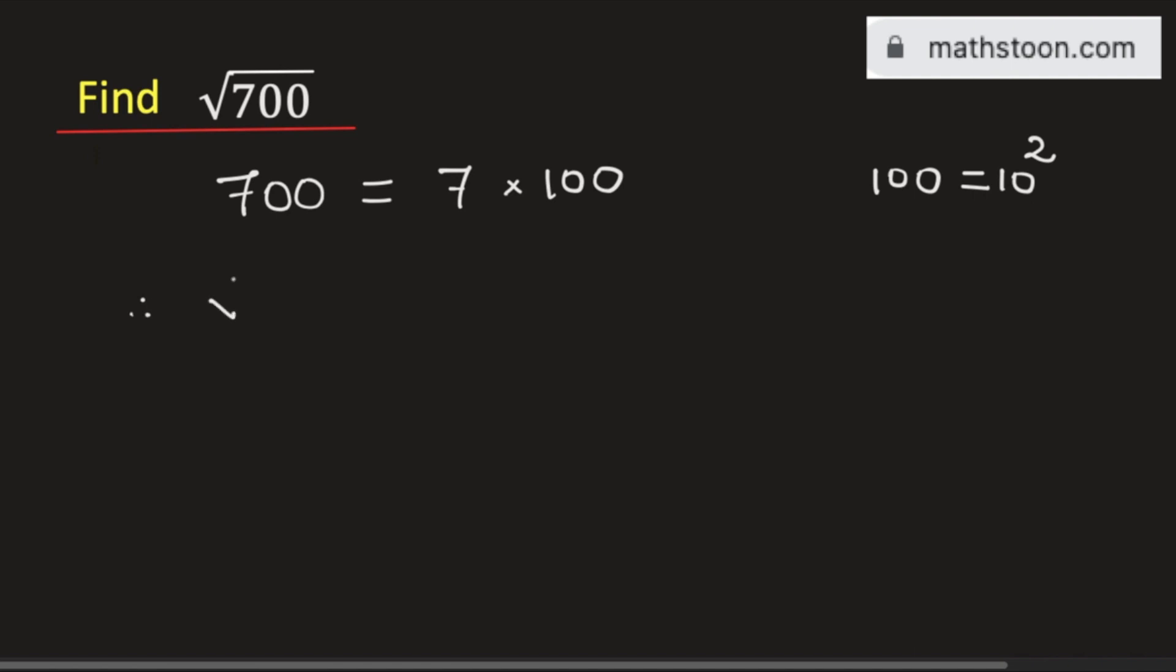Now taking √ on both sides, √700 will be equal to √(7 times 100).